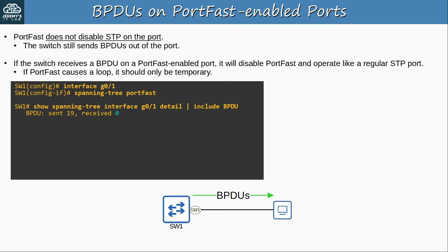Now let's see how an error-disabled port can recover. There are two ways: first, disconnect the offending switch and use shutdown/no shutdown to reset the disabled port — that's the manual method. The second option is automatic recovery with a feature called errdisable recovery. Use 'show errdisable recovery' to view its status. Unlike errdisable detection, errdisable recovery is disabled for all causes by default — you must manually enable it. The default recovery timer is 5 minutes, meaning every 5 minutes the switch will attempt to re-enable error-disabled ports if errdisable recovery is enabled for that cause.